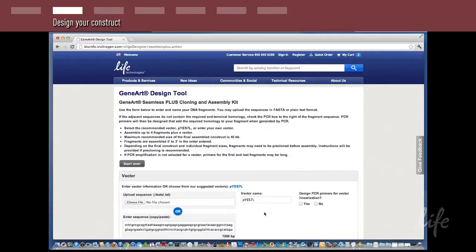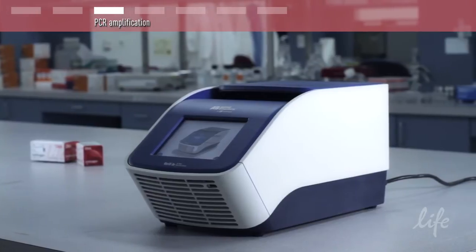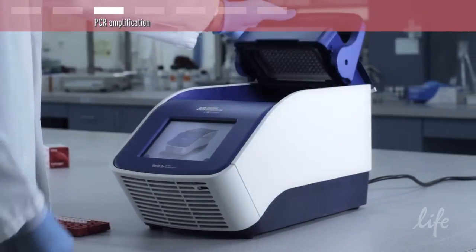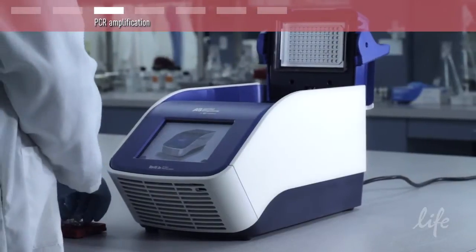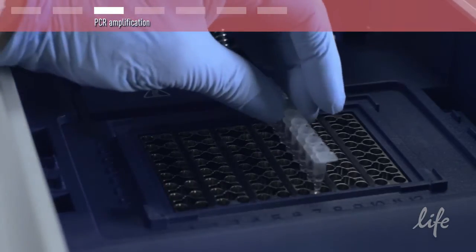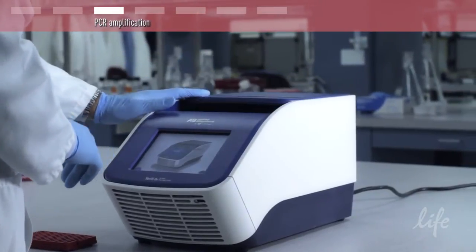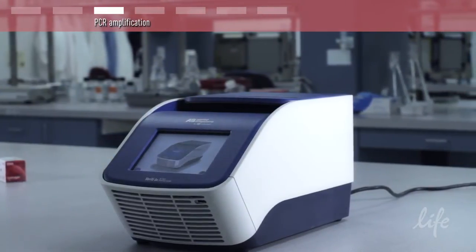The next step is PCR amplification to introduce n-terminal homology if it's required for assembly. This kit guarantees assembly of up to four fragments and constructs of up to 40 kb. However, many scientists have had success using the kit to assemble seven fragments and constructs of up to 50 kb.